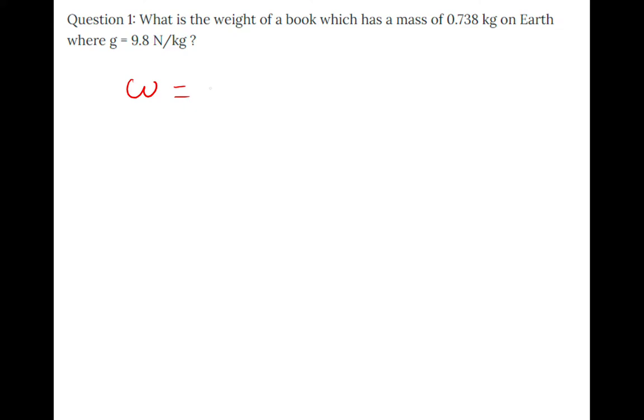Write the equation first: w = mg. Weight equals mass times gravity. If two letters are next to each other, it means they're multiplied. The mass is 0.738 multiplied by the gravitational field strength on Earth, which is 9.8. That gives you an answer of 7.2 newtons. The full answer is 7.2324, but two significant figures is fine.